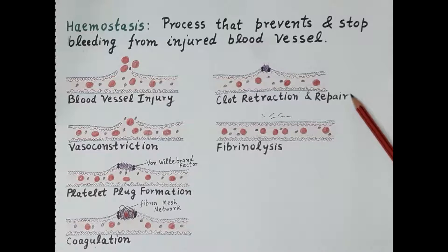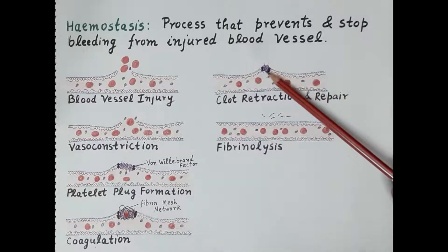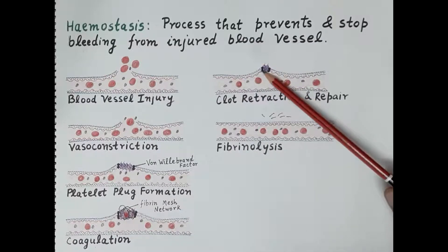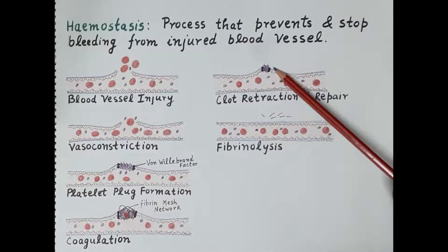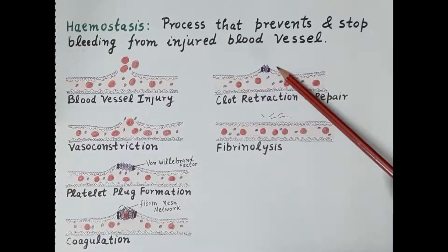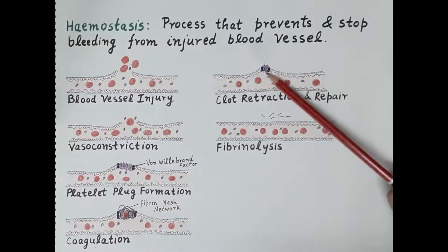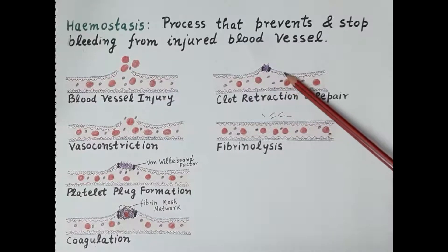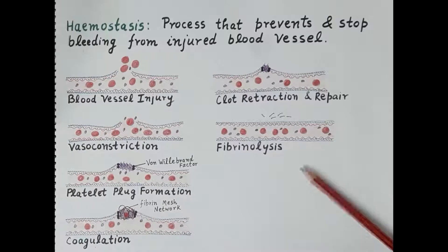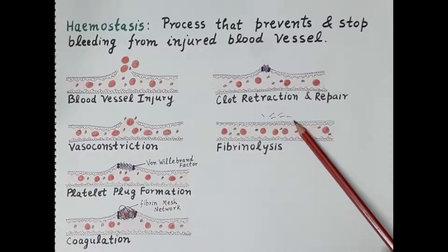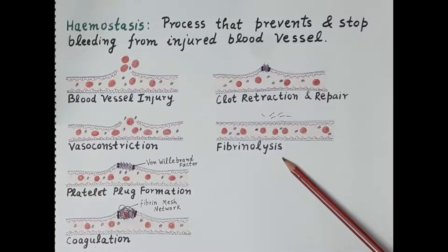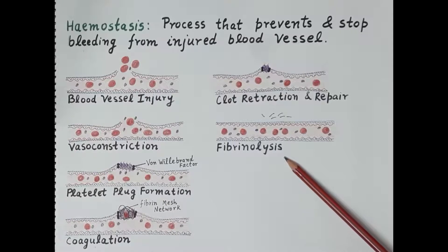The platelets contract, causing the clot to shrink, and the ruptured edges of the blood vessel come close together. The hole in the injured blood vessel wall is closed, allowing healing of the injured tissue. The last step is fibrinolysis, where the clot or fibrin mesh network dissolves after complete healing of the tissue. This is how hemostasis stops bleeding and repairs the injured blood vessel.